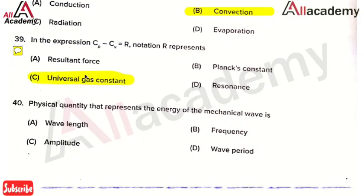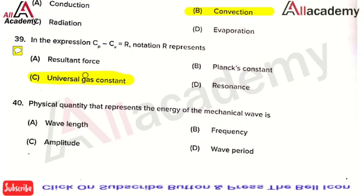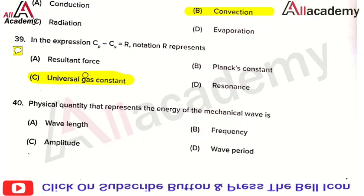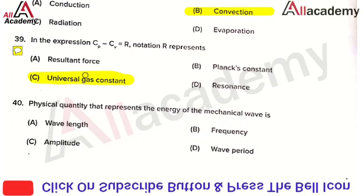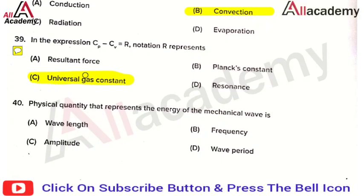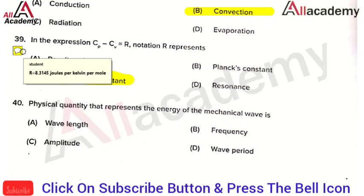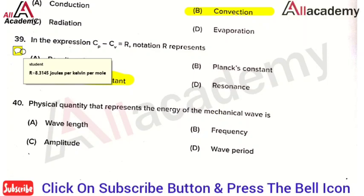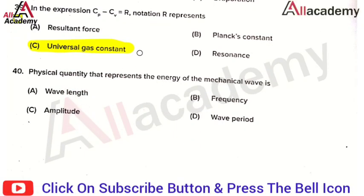The next question: in the expression Cp minus Cv equals R, the notation R represents — the right answer is option C, that is the universal gas constant. The universal gas constant is the difference between specific heat at constant pressure and specific heat at constant volume. The value of R is equal to 8.3145 joules per kelvin per mole.